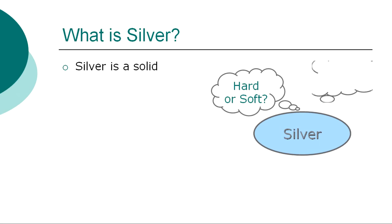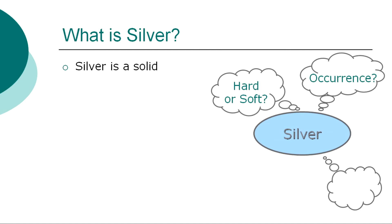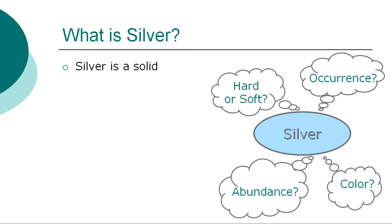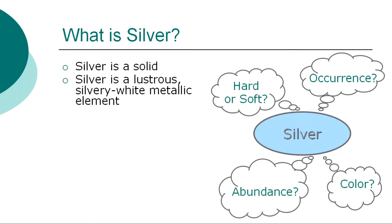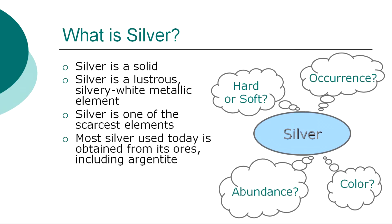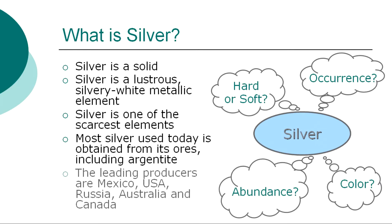What is silver? In a general overview of the element, we can at first describe silver as a solid. It is a lustrous silvery-white metallic element and is one of the scarcest elements. Most silver used today is obtained from its ores, including Argentite. The leading producers are Mexico, USA, Russia, Australia, and Canada. Silver is prepared in various ways, depending on the nature of its occurrence, but especially in connection with the refining of lead and copper.